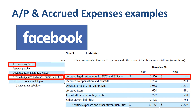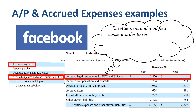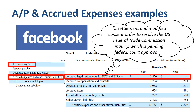The quick summary of the largest one is: in July 2019, Facebook entered into a settlement and modified consent order to resolve the US Federal Trade Commission inquiry, which is pending federal court approval. Among other matters, the settlement with the FTC requires Facebook to pay a penalty of $5 billion and to significantly enhance its practices and processes for privacy compliance and oversight. Facebook has recognized the penalty in accrued expenses and other current liabilities on the consolidated balance sheet as of December 31, 2019.